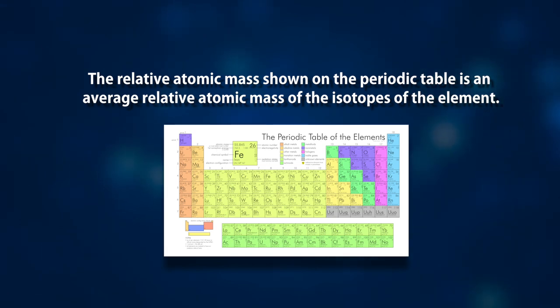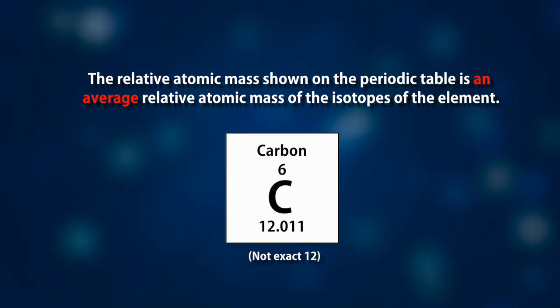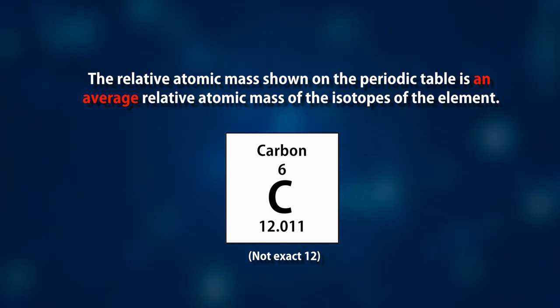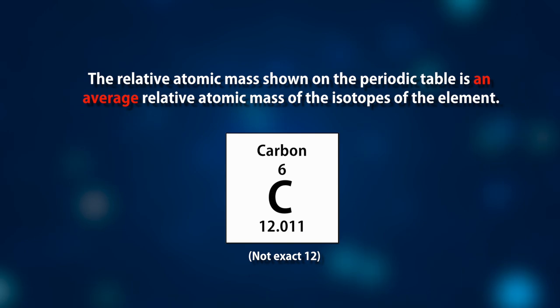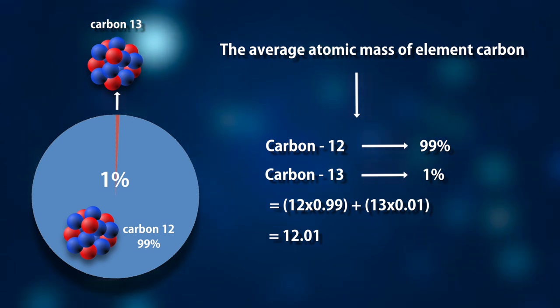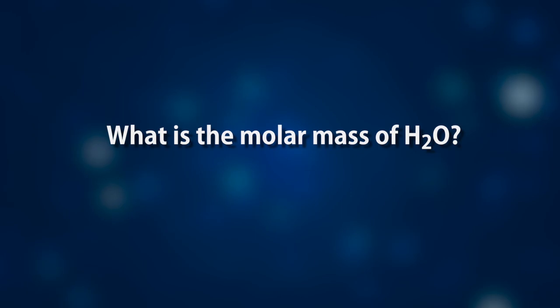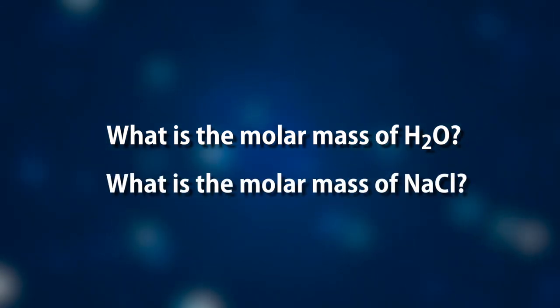Pay attention to the fact that the relative atomic mass shown on the periodic table is an average relative atomic mass of the isotopes of the element. That's why the relative atomic mass of carbon on the periodic table is 12.01 instead of exactly 12 — because 12 is the relative atomic mass of carbon-12, while 12.01 is the average relative atomic mass of naturally occurring carbon due to the presence of some carbon-13. Now, how do we calculate the molar mass of molecules or ionic compounds — for example, the molar mass of water or sodium chloride?